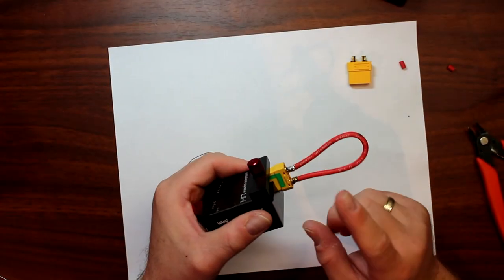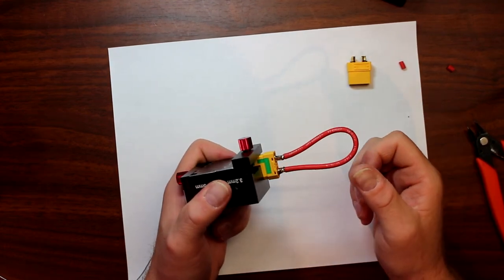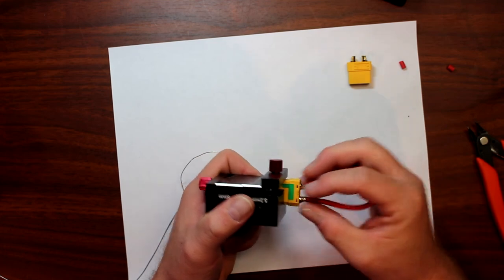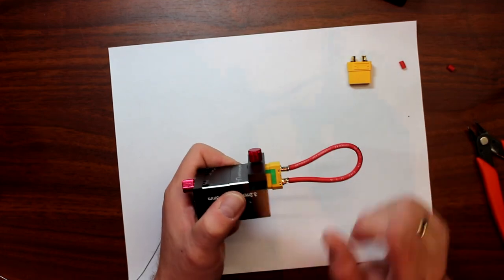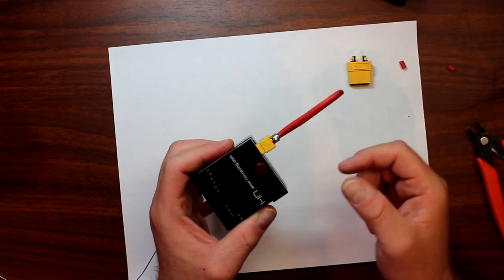Now once you did this side, you do the other side. Depending on the kind of XT-90s, some will have a cap, some will use shrink tube. Don't forget to put your shrink tube if you're using shrink tube. If not, you'll need to unsolder and restart.